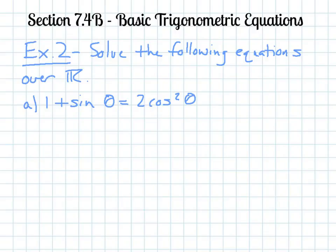For example 2, we want to solve the following equations over all reals — that special R with a double bar. For letter A, I have 1 plus sinθ equals 2cos²θ. These are difficult to start because sine and cosine — you don't really want them together at the same time. You want them all in terms of either sine or cosine or tangent, so we want to use our properties to get them all in terms of one.